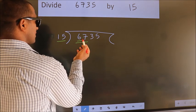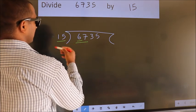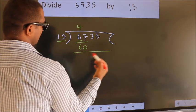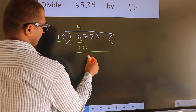A number close to 67 in the 15 table is 15 fours, 60. Now we should subtract. We get 7.